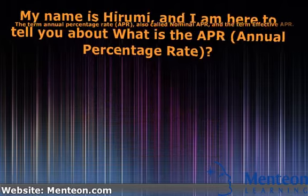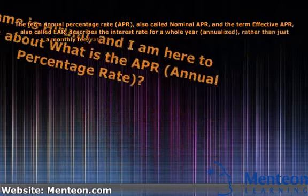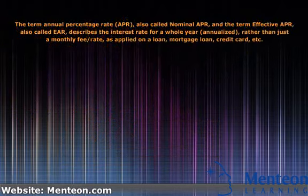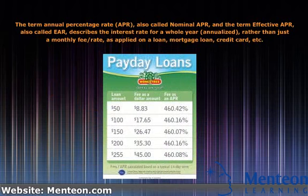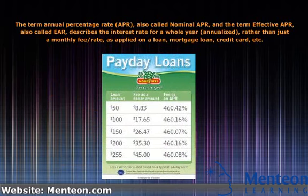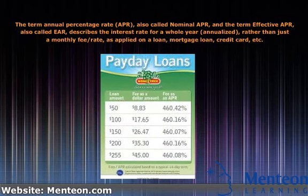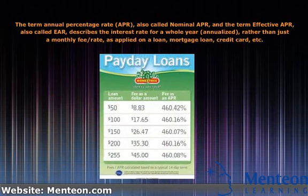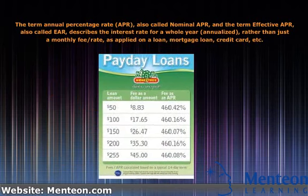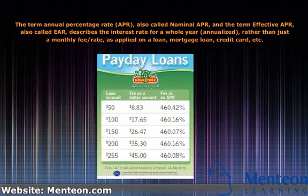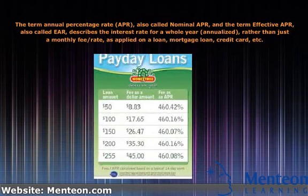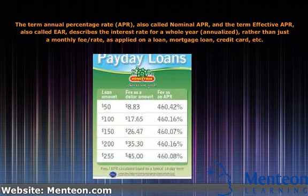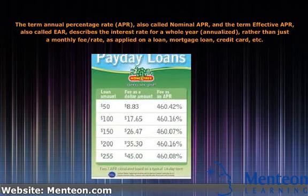The term annual percentage rate, APR, also called nominal APR, and the term effective APR, also called EAR, describes the interest rate for a whole year, annualized.